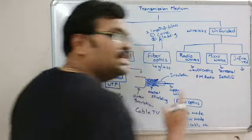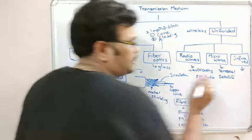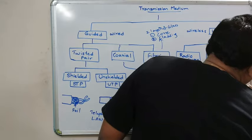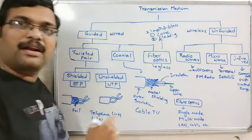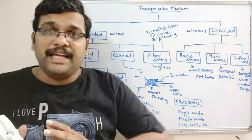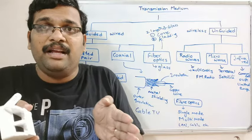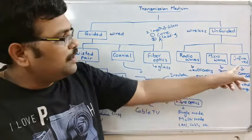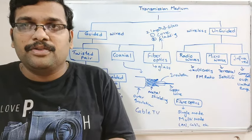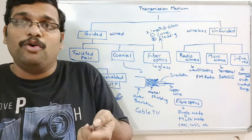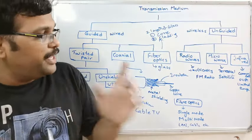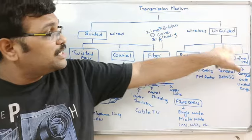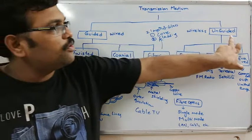Coming to infrared — this is used for communicating over a short range. Examples include sharing files from one mobile to another mobile, which must be kept within a limited range, and TV remote operation where channels and volume are changed using infrared waves without any wires.